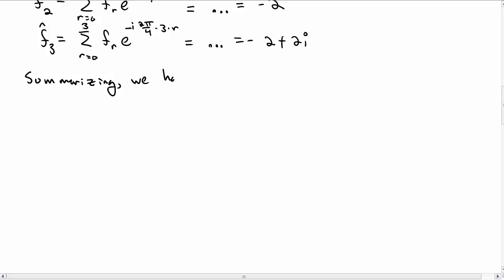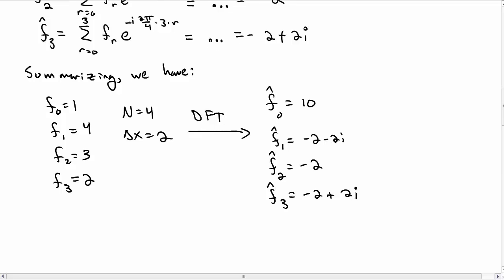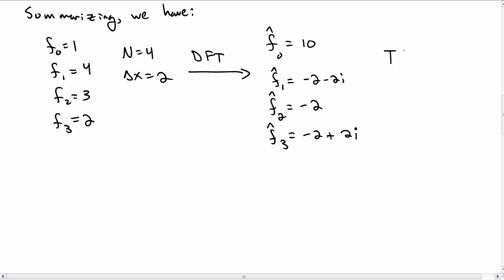So summarizing our calculations, we started with a set of 4 points, 4 data points, N equal to 4 with a spacing of 2. And after our discrete Fourier transform, we now have 4 amplitudes: f hat sub 0, f hat sub 1, f hat sub 2, and f hat sub 3. And we never needed delta x at this point. So that's what the discrete Fourier transform is, it just spits out a bunch of these numbers.